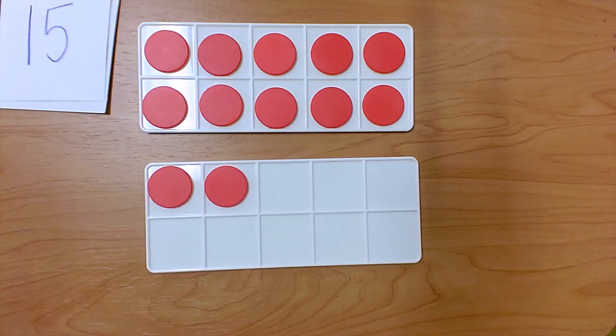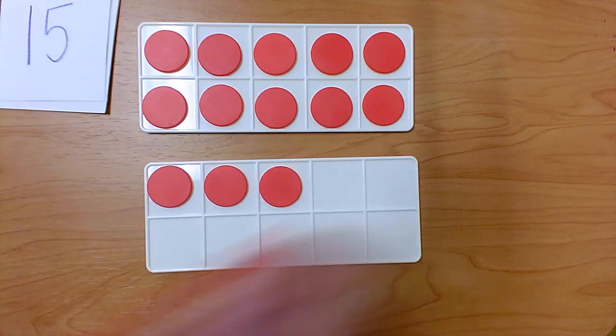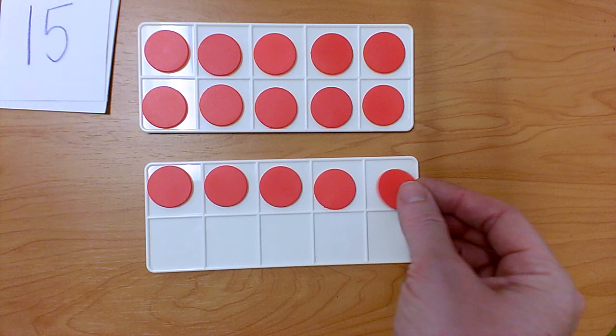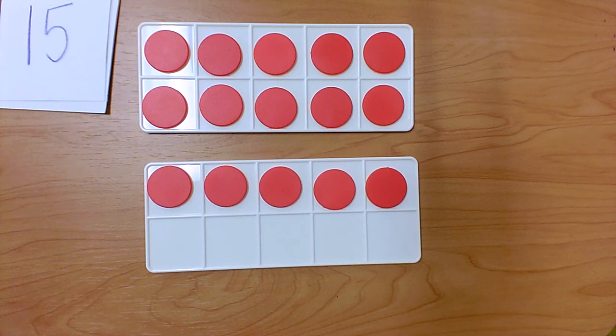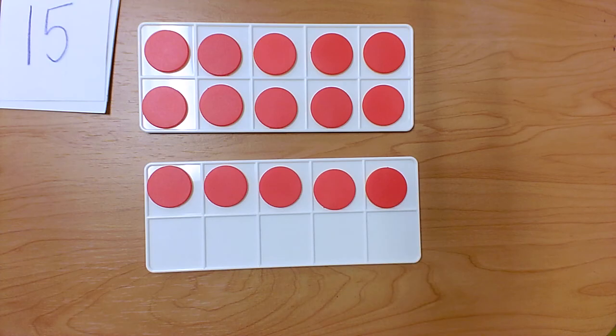15 and it starts with a 1 because it has one group of 10. How many extra ones should I put in there to match that card? You're right. It's going to need 5 extra ones. I don't even have to count them because I know that the first row in a 10 frame holds 5. This number shows one group of 10 and 5 extra ones.